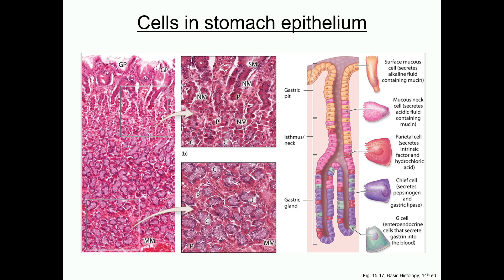As mentioned previously, the pits and glands contain simple columnar epithelium, and there are many different types of cells found in the epithelium that perform important functions in the digestive process. There are four major cell types, and we'll walk through them using this cartoon as a guide as we discuss each different cell type.